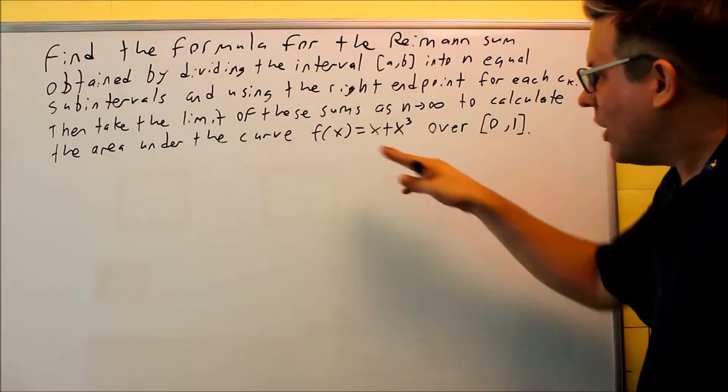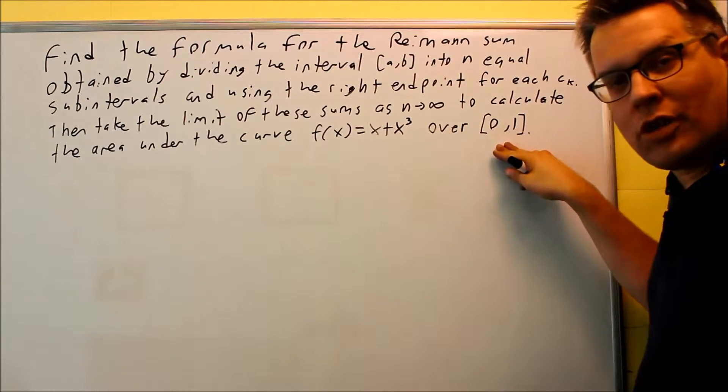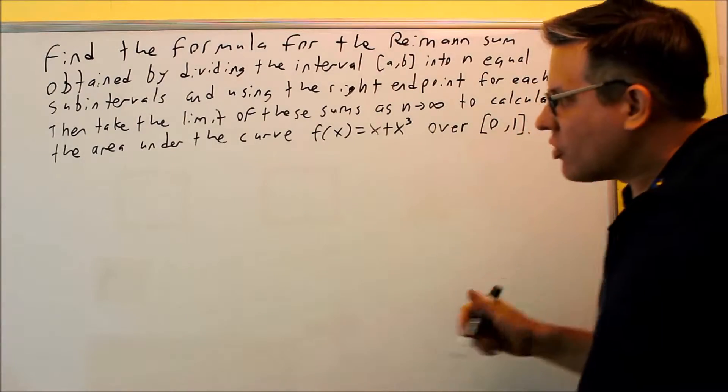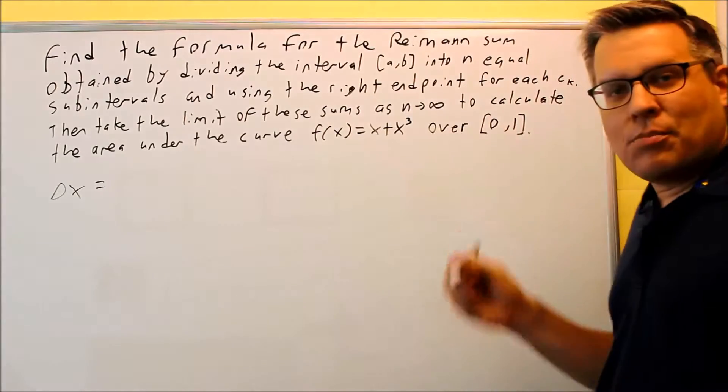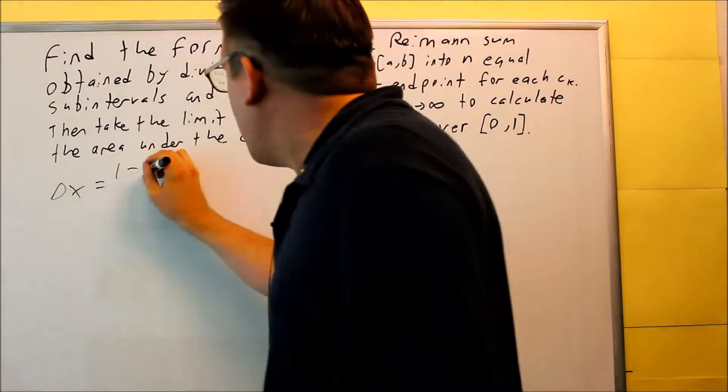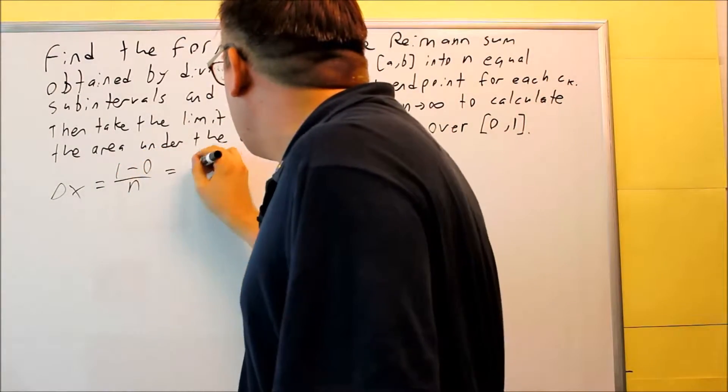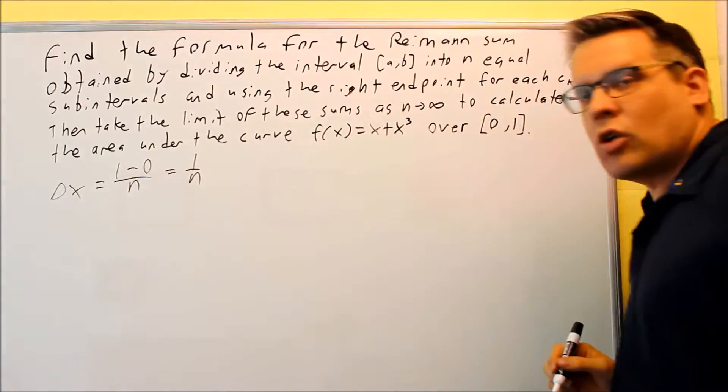Okay, so we're going to do one more problem. We have x plus x cubed. The interval is 0 to 1. The first thing you always do, find your delta x. Your delta x is b minus a over n. 1 minus 0 over n means that your delta x is 1 over n.